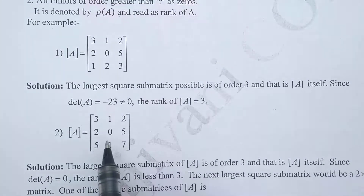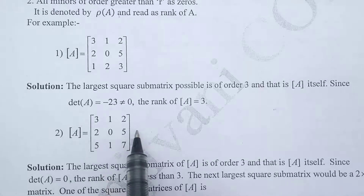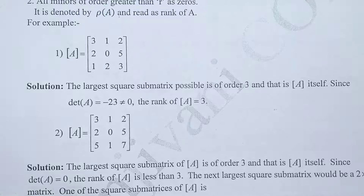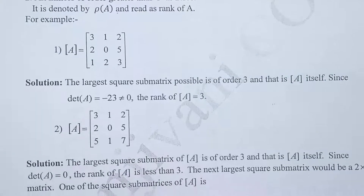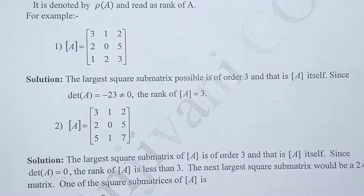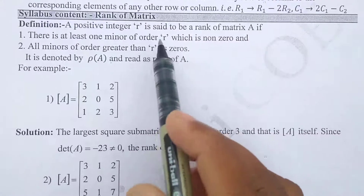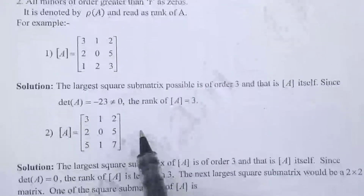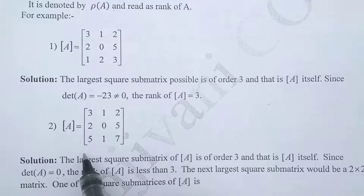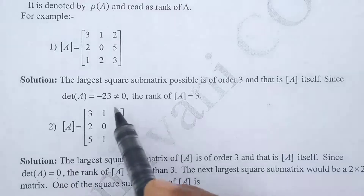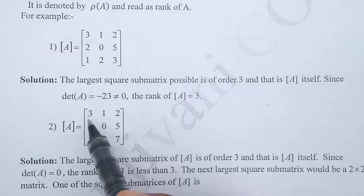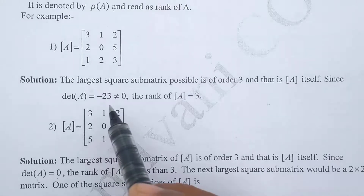Now take a second example: a 3×3 matrix with first row [3, 1, 2], second row [2, 0, 5], and third row [5, 1, 7]. Again, start with the minor of maximum order — the 3×3 determinant. The value of this determinant is 0. So the condition that at least one minor of order r is non-zero fails for r = 3, meaning 3 is not the rank. The rank must be less than 3.